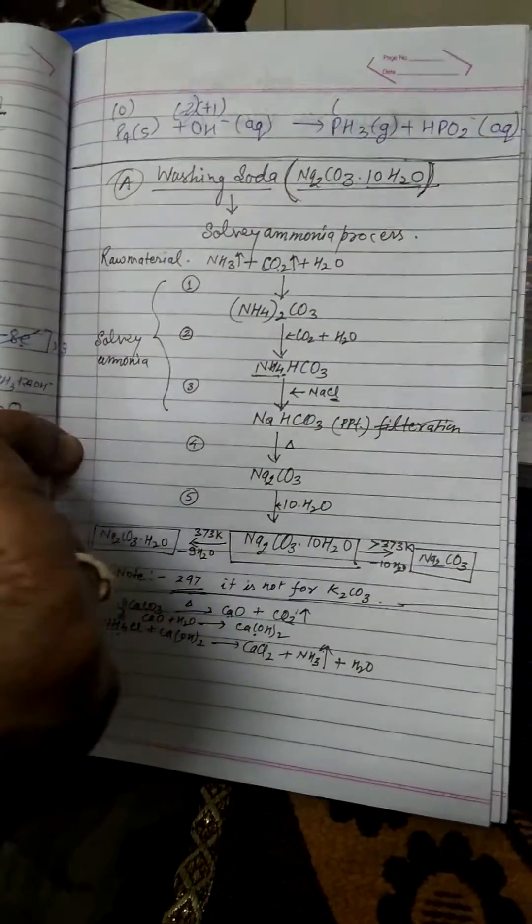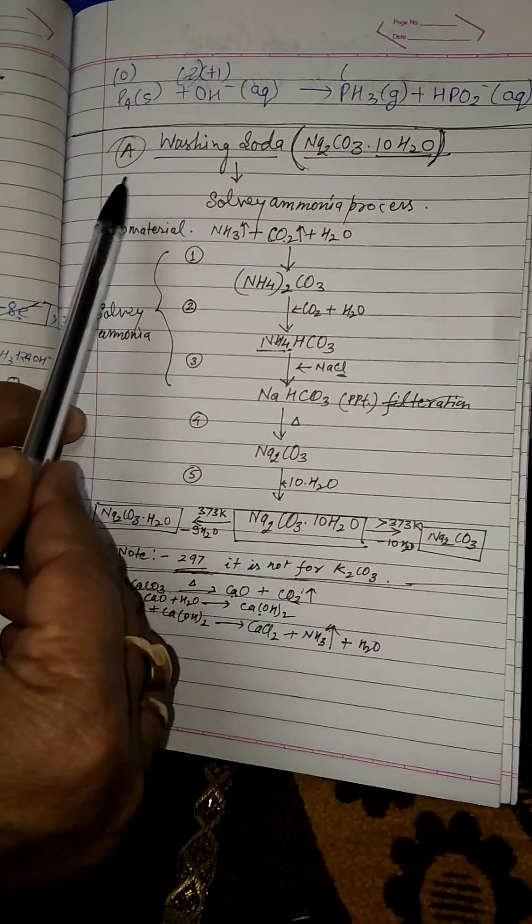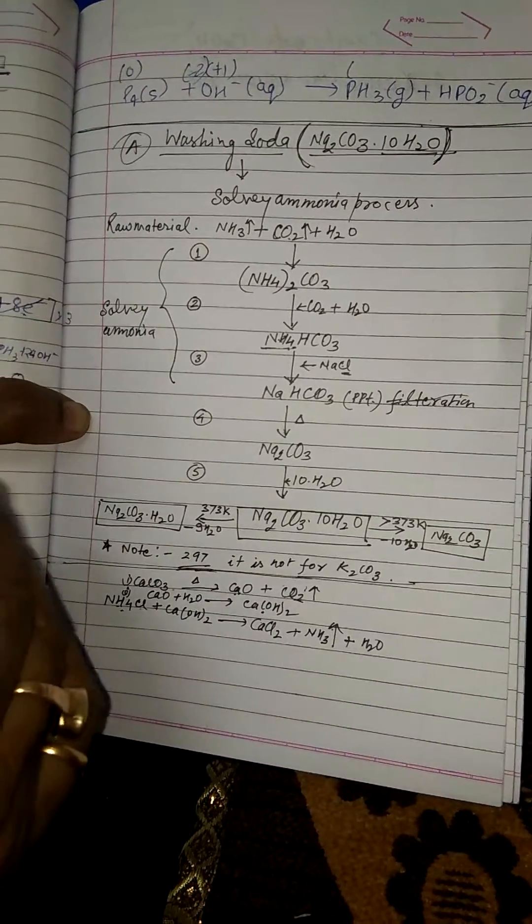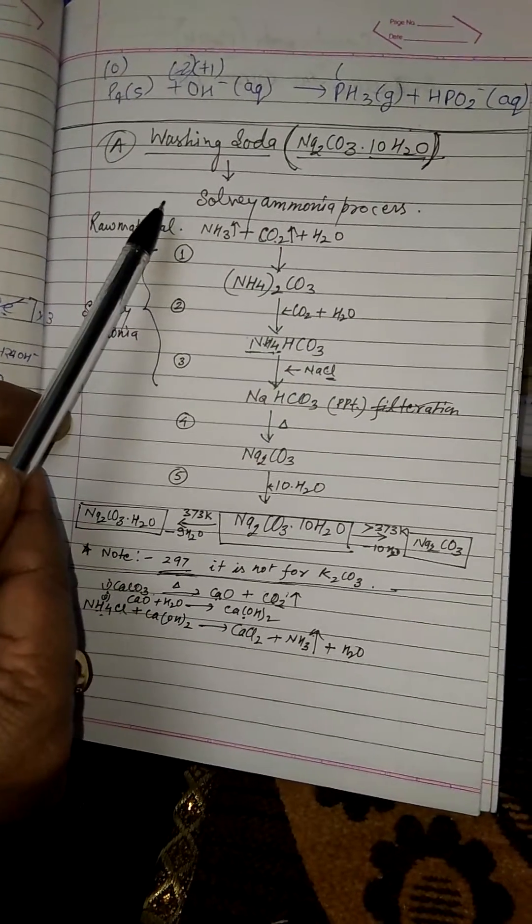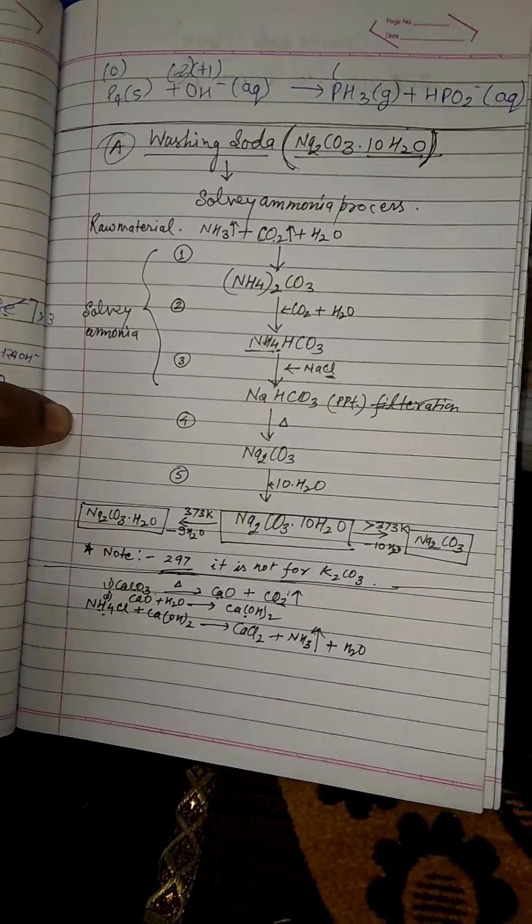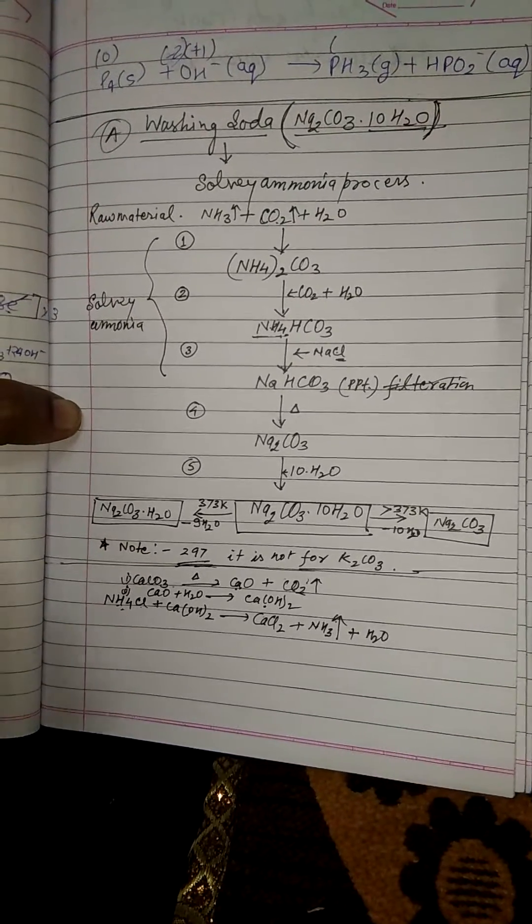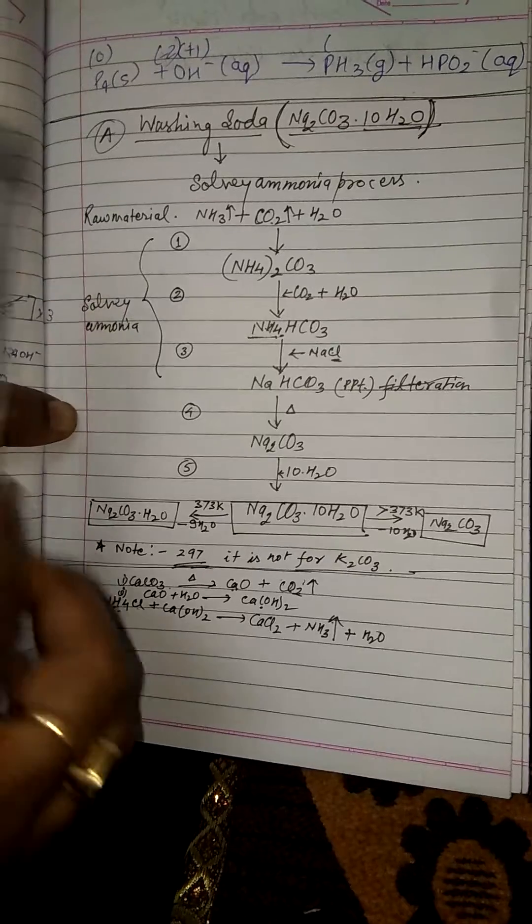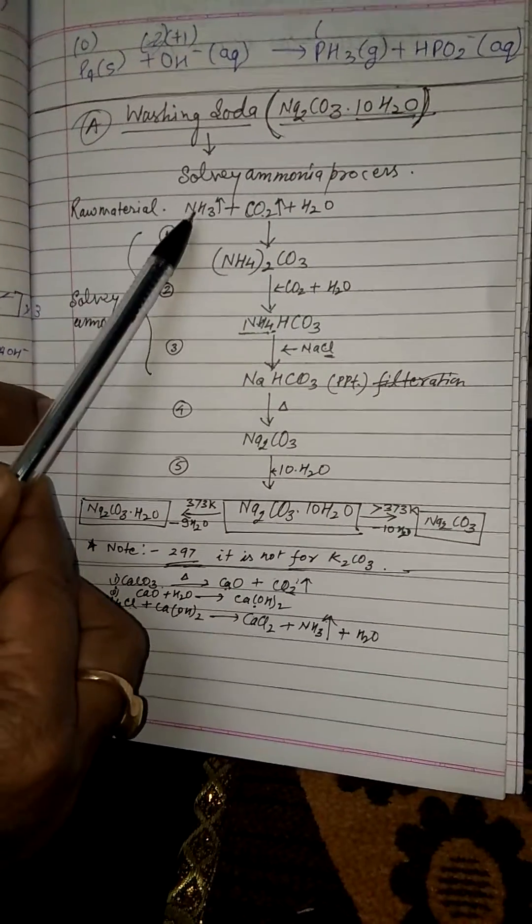Hello students, here we are preparing washing soda by the Solvay ammonia process. Some important points are as follows. First, remember the raw materials: ammonia, carbon dioxide, and water.